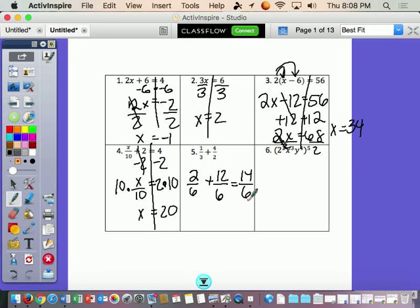We want to write that as a mixed number. We will get 2 and 2 sixths, which reduces to 2 and 1 third. I know that's a funky 2, bear with me here.